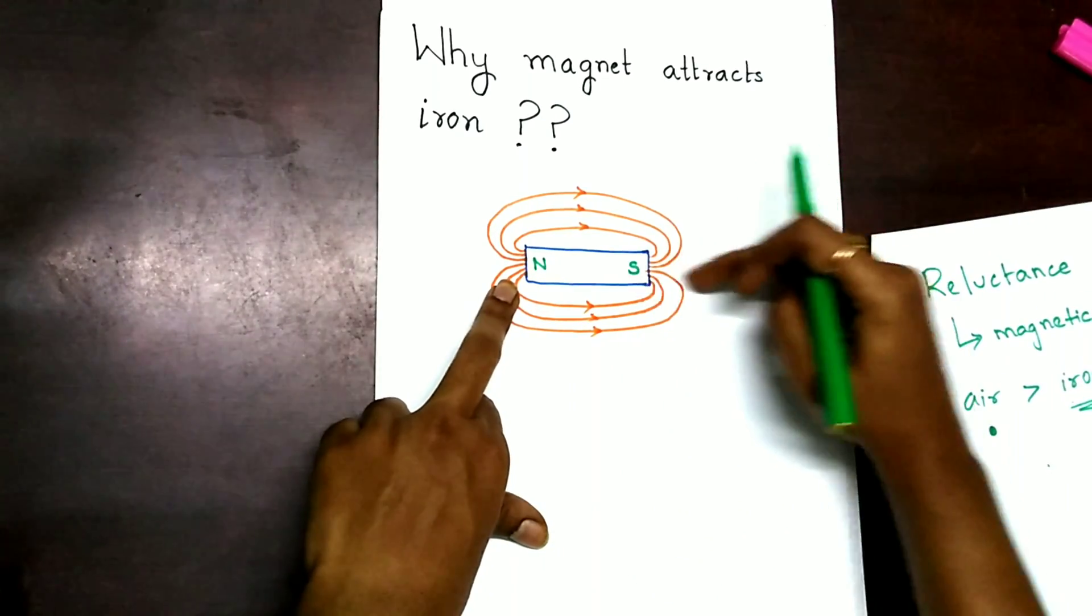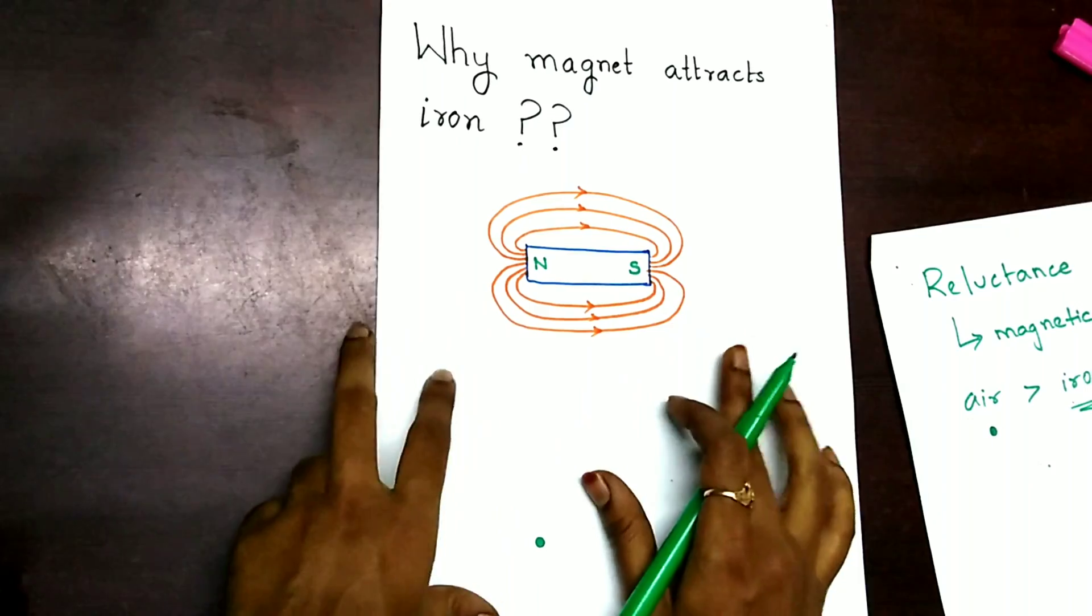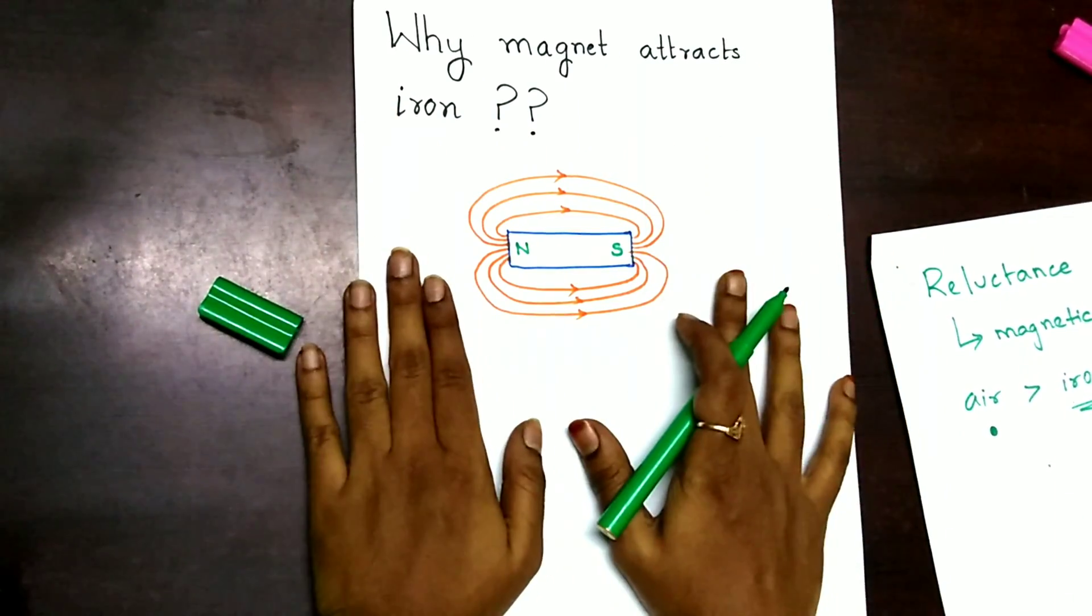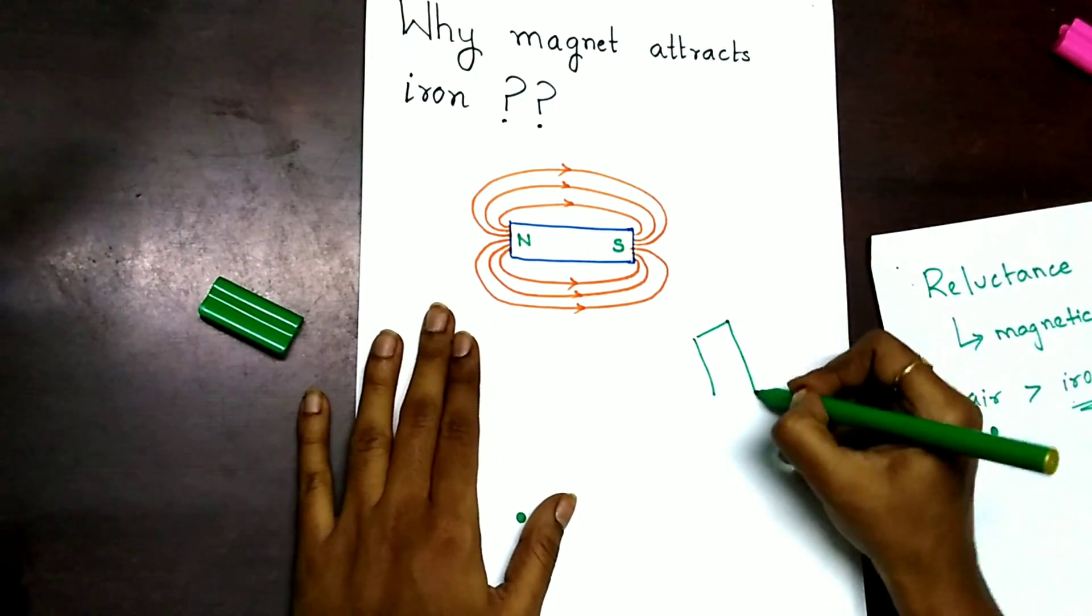the side from which the magnetic lines of force are coming out is termed as north, and the pole where the magnetic lines of force are entering is termed as south pole. Now, you can see that the magnetic lines of force are established in air. Now, if I take an iron piece,